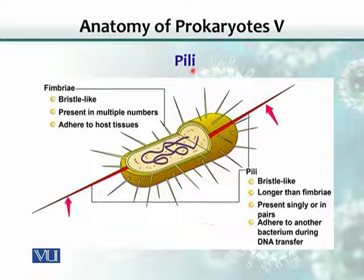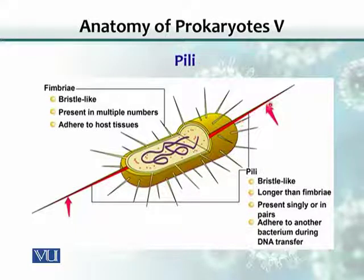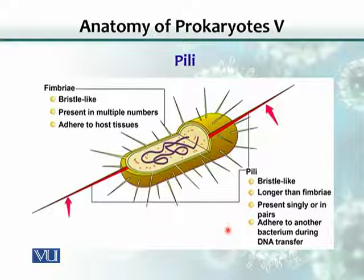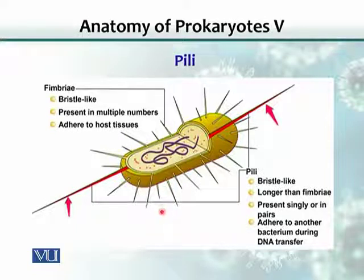Another structure is called pili (singular: pilus). There could be one, two, or up to ten pili. They are bristle-like, longer than fimbriae, and can be present singly, in pairs, or up to ten in number. While fimbriae are used to attach to surfaces, pili are used by bacteria to attach to another bacterium.